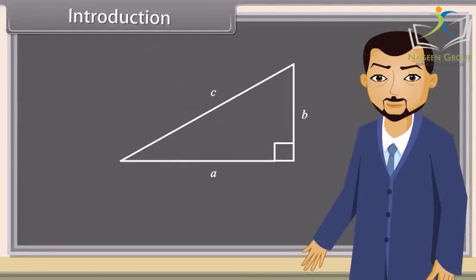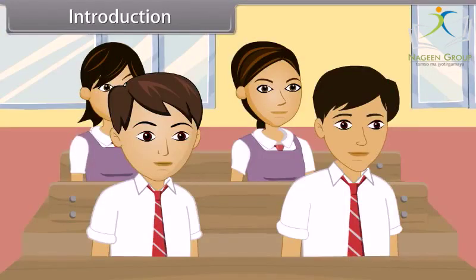Students, this is a right-angled triangle. Can you tell which side is the hypotenuse? C! C is the hypotenuse.